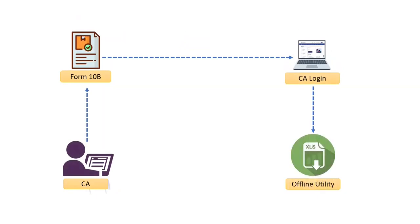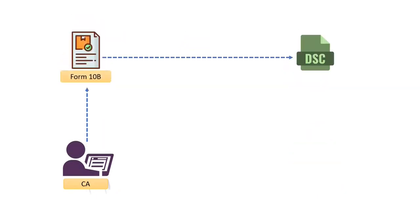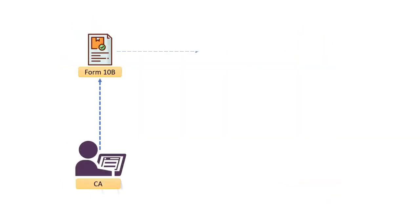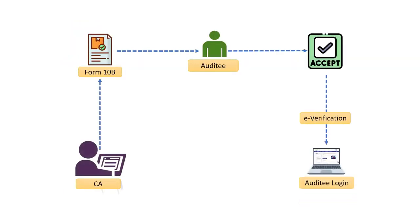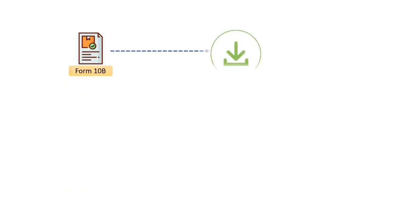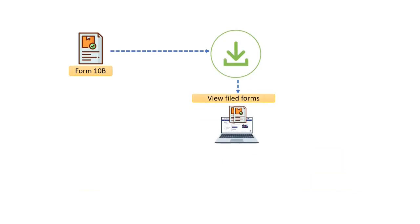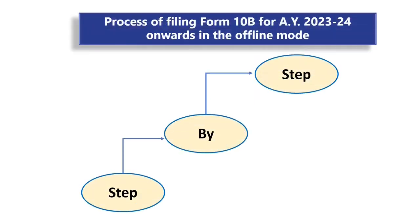The CA is required to accept the request under the CA login and upload the form using the offline utility, then submit using the Digital Signature Certificate under the CA login. The form will thereafter be required to be accepted by the auditee, who must complete the process of e-verification under the auditee login. Post filing, the submitted form can be downloaded from the 'View Filed Forms' functionality for both CA and auditee login.